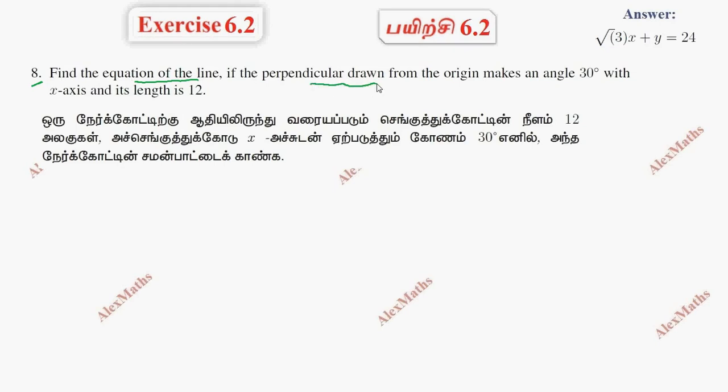Find the equation of the line if the perpendicular drawn from the origin makes an angle 30 degrees. That means alpha is 30 degrees. That means it is x-axis and its length is 12. P is 12.